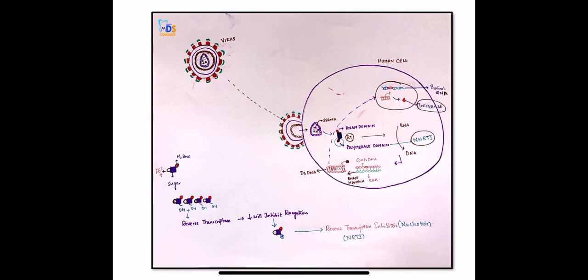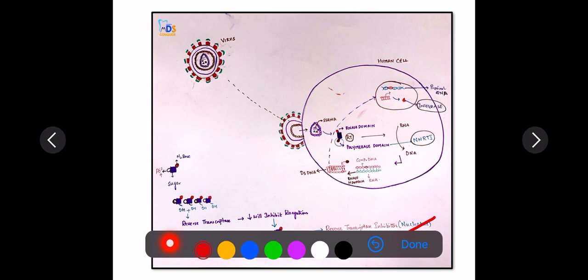A drug has been introduced wherein the OH group is absent, so that drug will go and fool the viral nucleotide, and chain formation is prohibited. Those drugs are called nucleoside or nucleotide reverse transcriptase inhibitors. Nucleoside or nucleotide reverse transcriptase inhibitors act on the nucleotide or nucleoside and prevent the addition of the hydroxyl groups with one another.